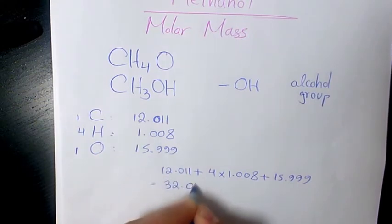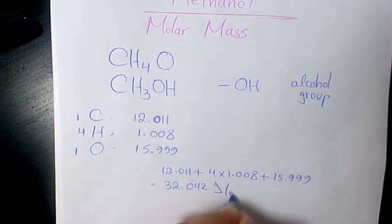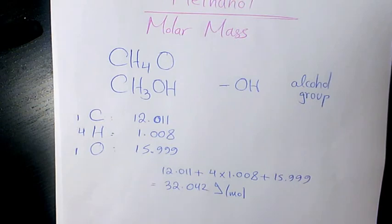The answer is 32.042 grams per mole. That's the unit for molar mass or molecular weight. This means that each mole of methanol contains 32.042 grams. If you have two moles, you multiply by two. If you have ten moles, you multiply by ten.